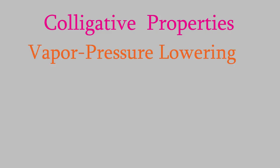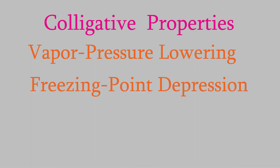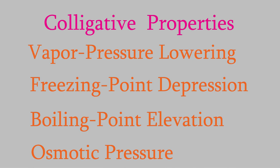These are called colligative properties, and they're vapor pressure lowering, freezing point depression, boiling point elevation, and osmotic pressure. We talked about the first three in the previous two videos, so now it's time to talk about the last one, osmotic pressure.